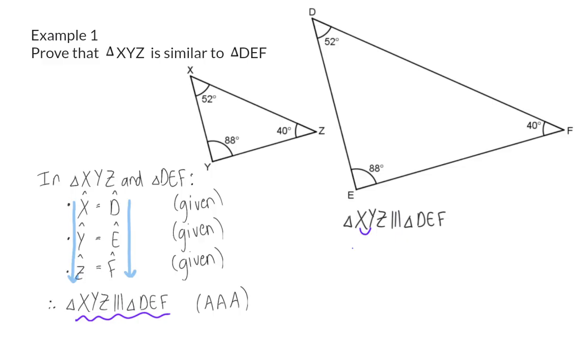We can now say that side XY and side DE, the first two letters, will have the same ratio as side YZ and side EF, the last two letters. And it will also be the same ratio as our first and last letters, XZ, and first and last, DF.